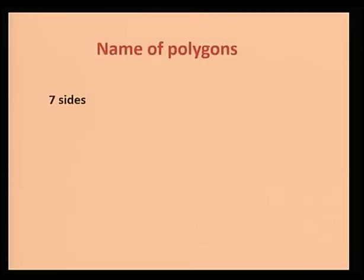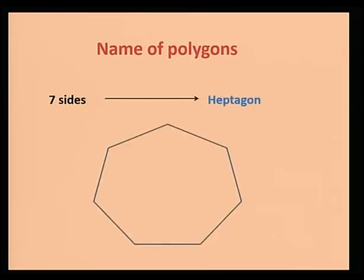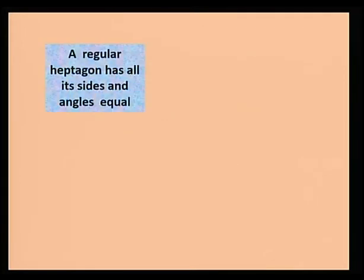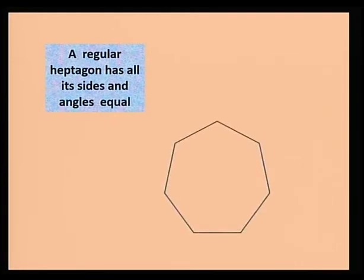A polygon with seven sides is called a heptagon. Here is a heptagon. Again, if all the sides and angles are equal, we have a regular heptagon.